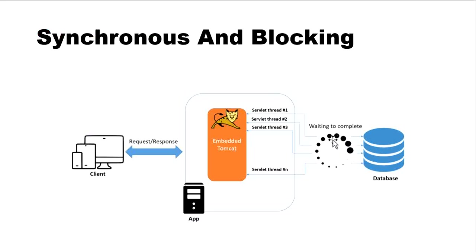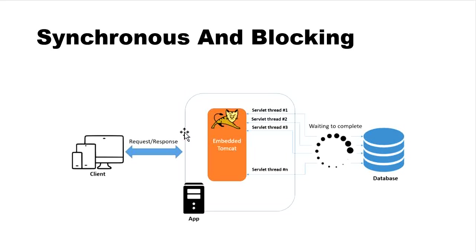When thread one receives the data from the database, it returns the response. Then the second request is assigned to thread two, which also waits until the database returns a response. If the thread pool size is limited to, say, 20 threads, we can only handle 20 concurrent requests. If 25 requests come in simultaneously, the remaining 5 will wait until threads become free — this significantly degrades application performance.